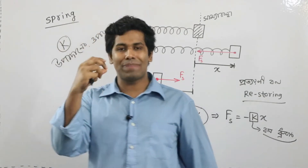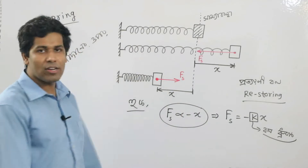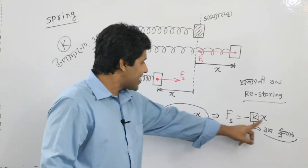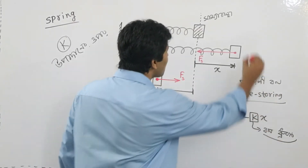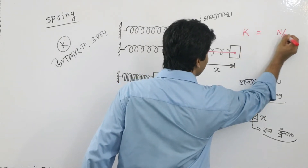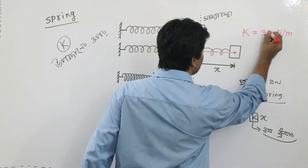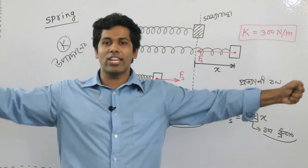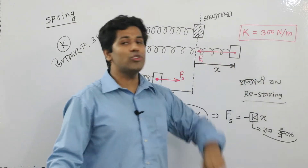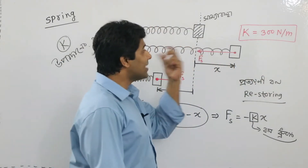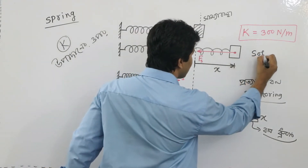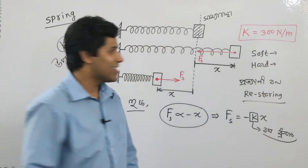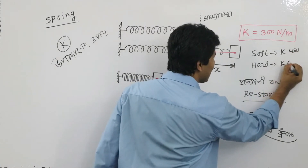You have to find the spring constant with its units. If you have 1 square unit, you will find the corresponding spring value. Let's take a look at two sides: this side is the soft spring, and this side is the hard spring. The soft spring and hard spring differ in their stiffness.